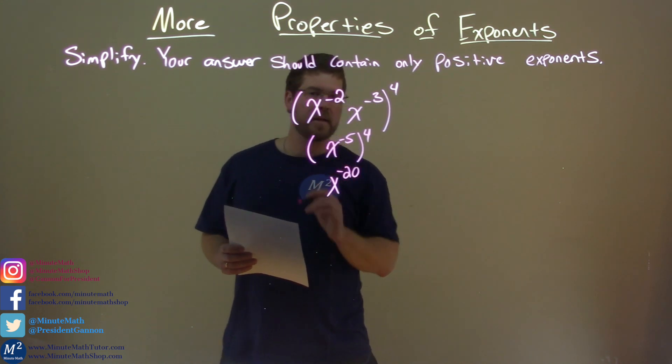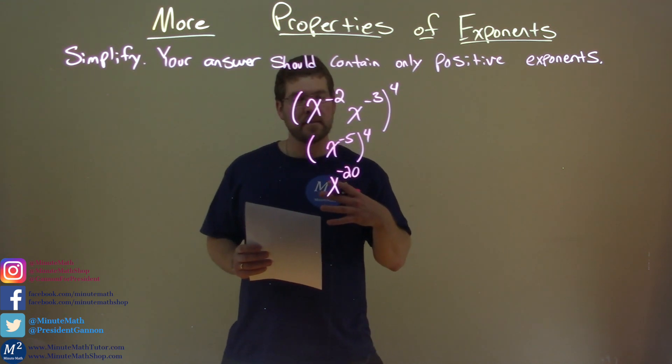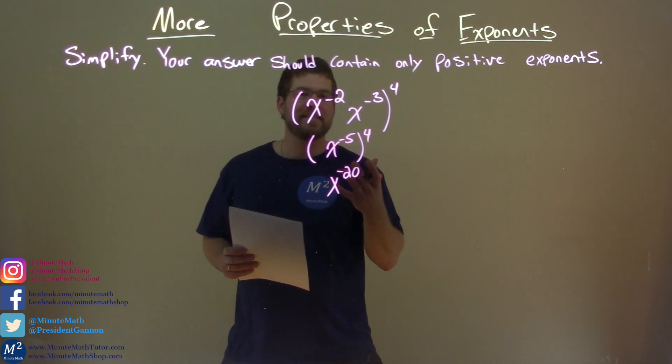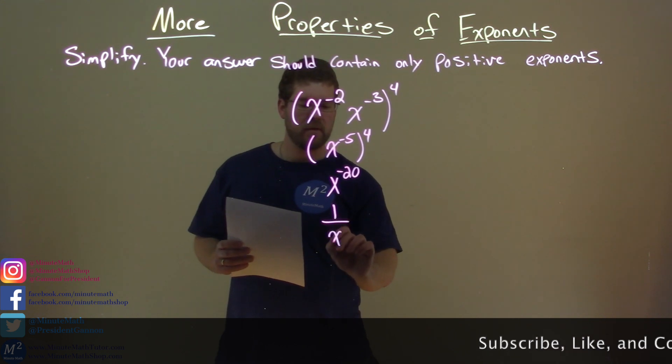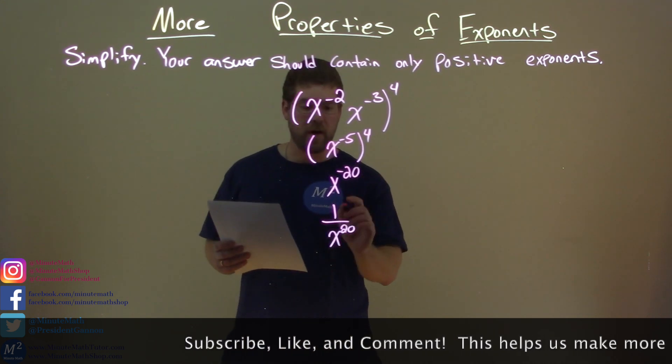Alright? Not done. We want positive exponents. x to the negative 20 is the exponent there. It's the same as 1 over x to the positive 20th power. And there we have our final answer.